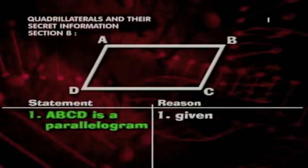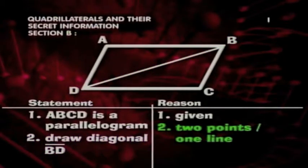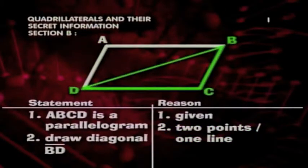Now we need to set up some triangles. So we draw a diagonal BD as our second step. Our reason is, through any two points, there is exactly one line. Now we have two triangles, ABD and CDB.